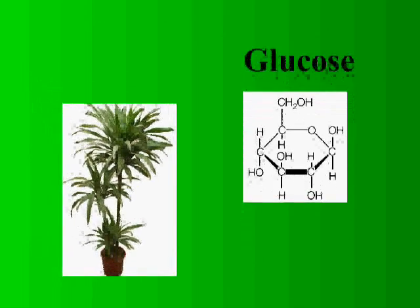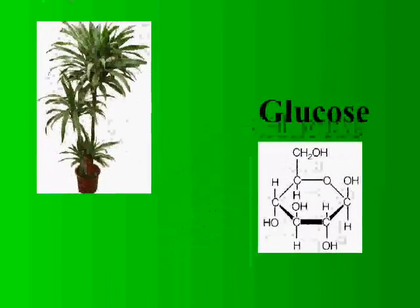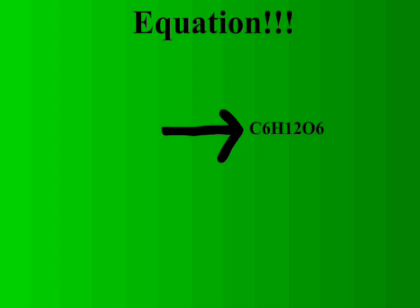Plants need to create glucose for food. This means that one of the products of photosynthesis is glucose, C6H12O6. Also remember that we as humans breathe in O2 and give off CO2. Plants do the opposite — they take in CO2 and give off O2. Add those to the formula. Finally, plants need water. Here is the basic formula for photosynthesis.